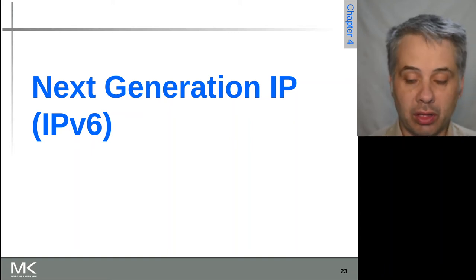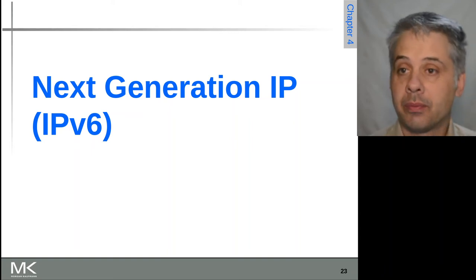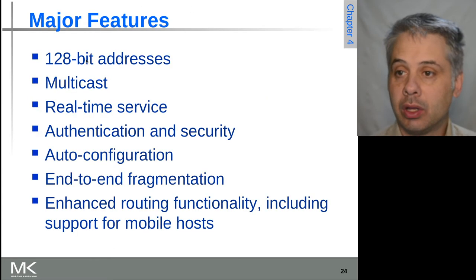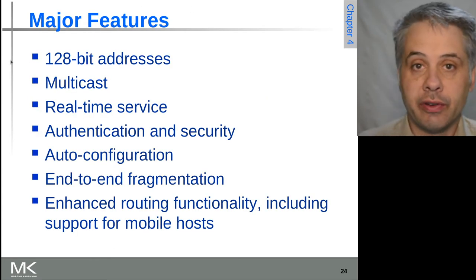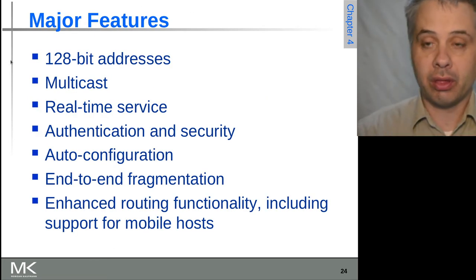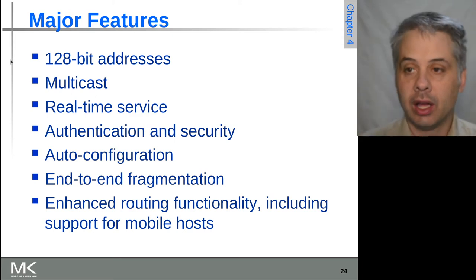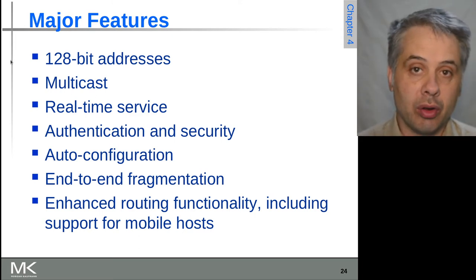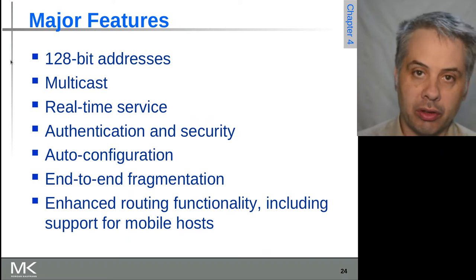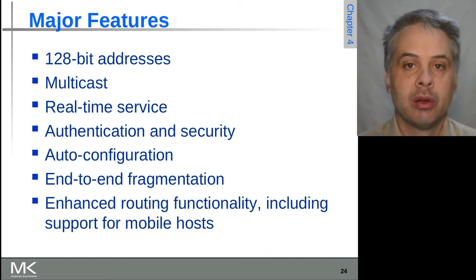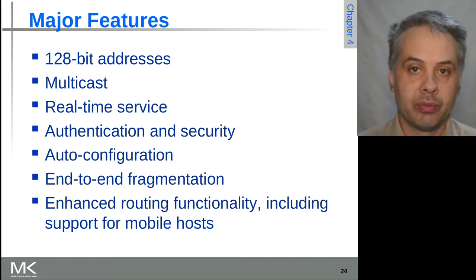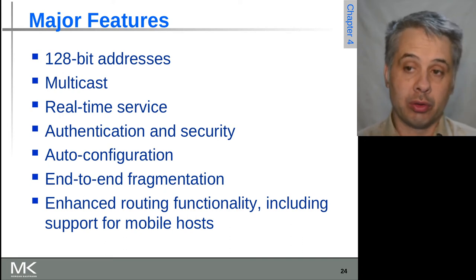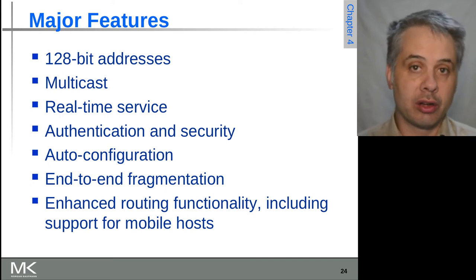Let's have a look at IPv6 and how it functions. The major feature of IPv6 versus IPv4 is 128-bit addresses. This means it does not have four times the number of addresses of 32-bit IPv4, but actually the number of addresses raised to the fourth power — so we're talking trillions and trillions of addresses rather than about four billion.